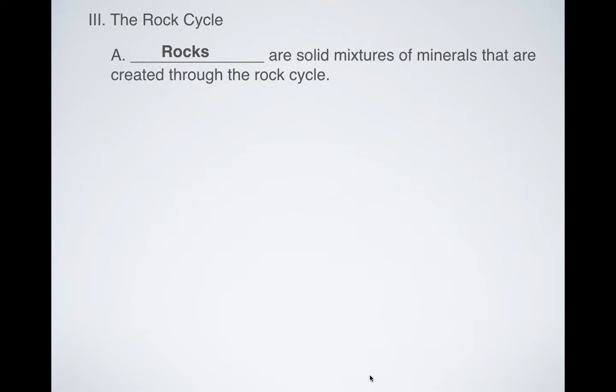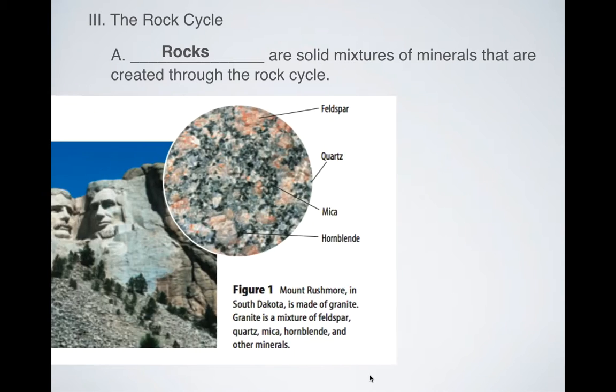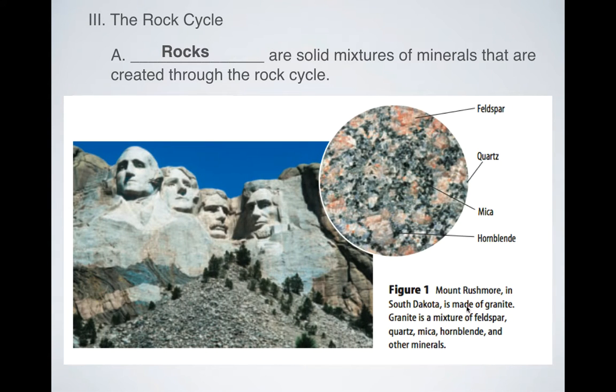So what exactly are rocks? They're just a solid mixture of minerals that are created through the process of going through a step or two, or maybe even three, of the rock cycle. You can see here we've got a sample of granite. Each one of these is a mineral: feldspar, quartz, mica, hornblende.